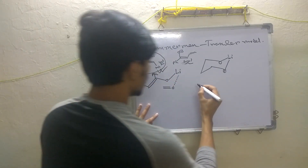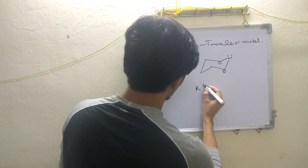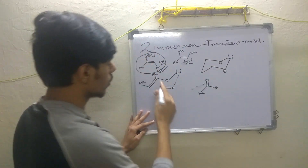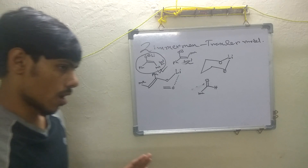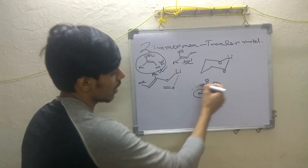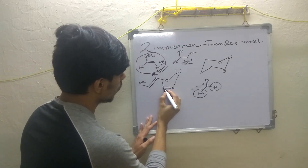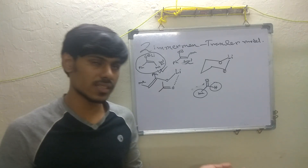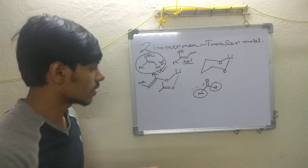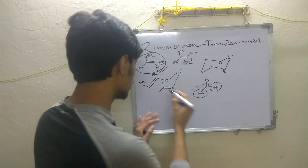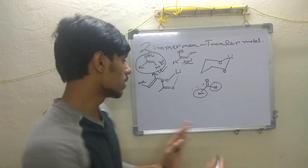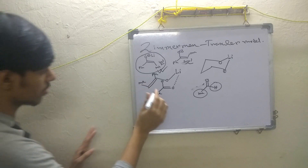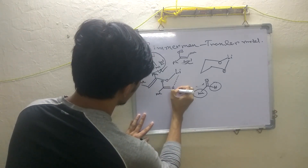Now for the aldehyde: it will coordinate with the lithium. If the aldehyde has a methyl and a hydrogen, you have to carefully consider where to place each group. There are two positions — axial and equatorial. The small hydrogen atom will be placed in the axial position, and the relatively more hindered methyl group will be placed in the equatorial position.